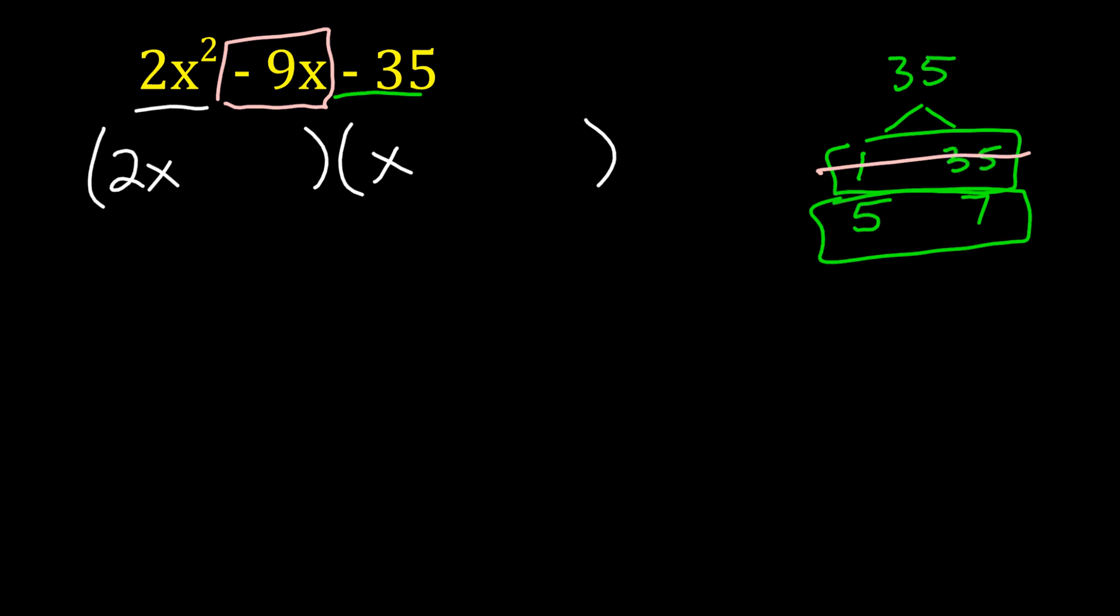What I can tell you right now is that 1 and 35 is not going to work. The reason I know it's not going to work is because I need to get negative 9x when I multiply this all out. Let's plug it in just to show you why it won't work. So let's put 1 and 35 in. When I multiply the 1 times x, that's 1x. And when I multiply the 2x times 35, that is 70x.